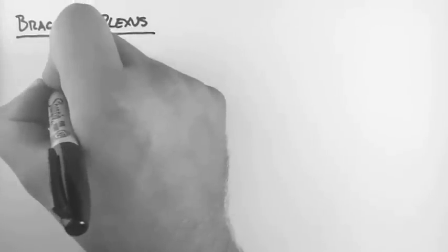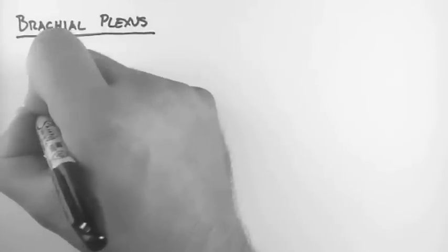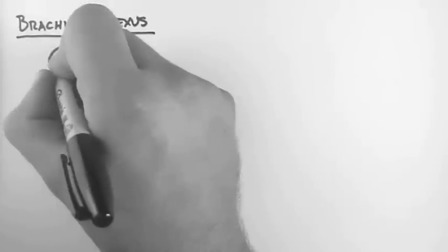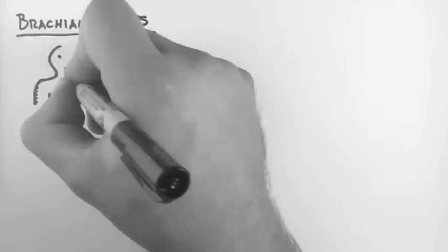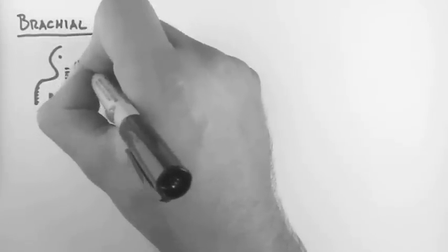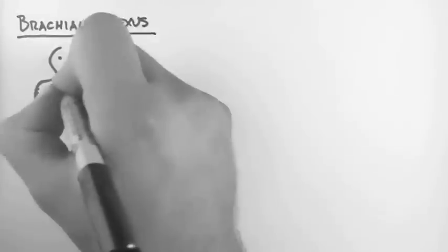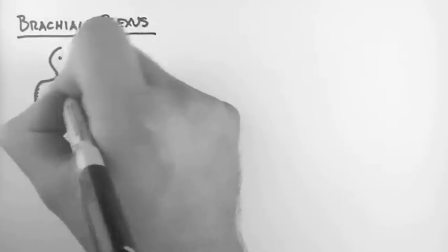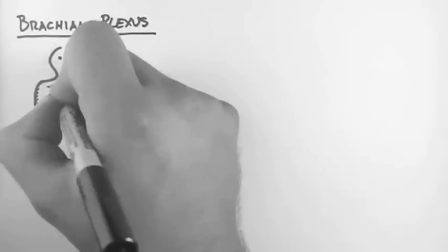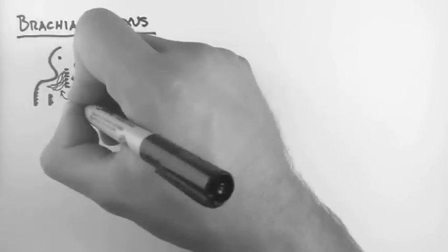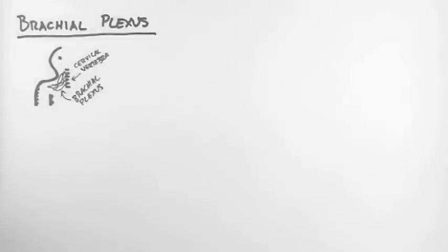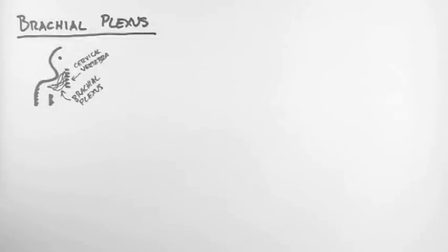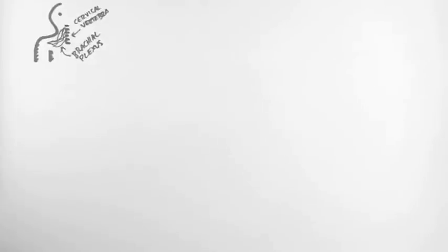So first off let's have a look at where the brachial plexus is located. Here's half a human and here I've drawn in the cervical vertebra. Then coming out of here just in the neck is the brachial plexus and it's a mixture of nerves and an intermingling of nerves which arise from the spinal cord and then continue on down the arm.